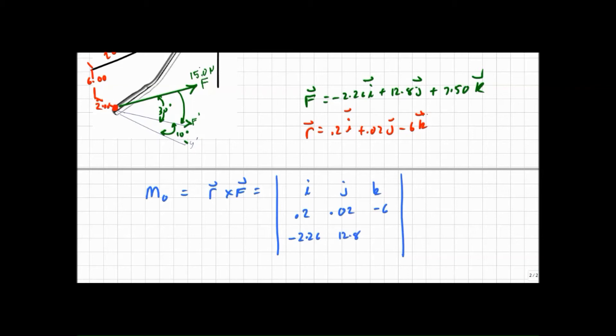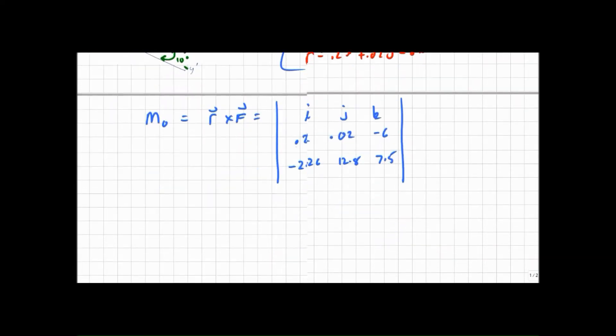and my F is minus 2.26, 12.8, 7.5. So if you aren't clear where all those numbers came from, look up here and make sure it makes sense to you.